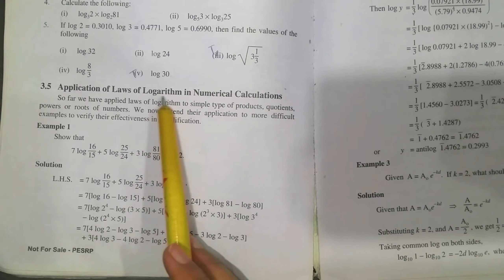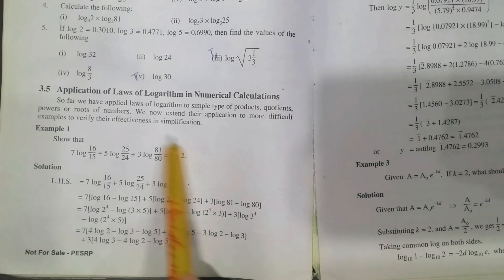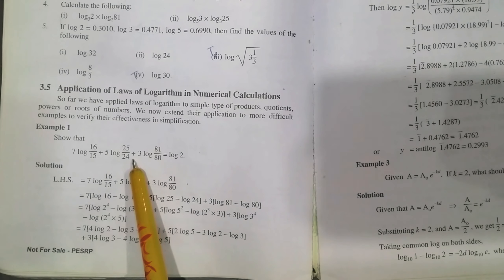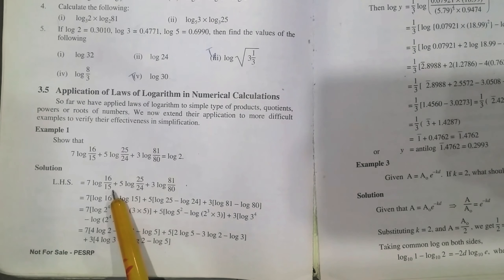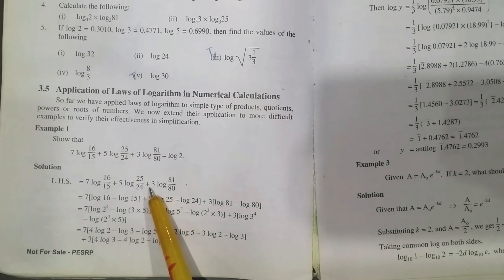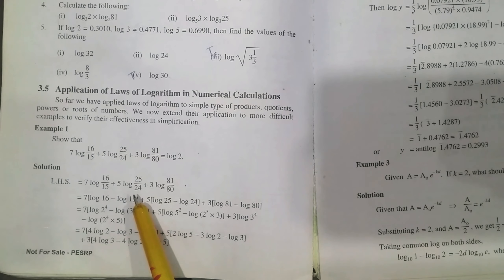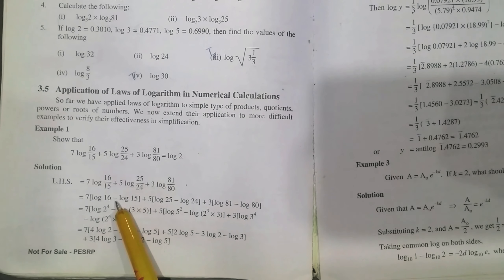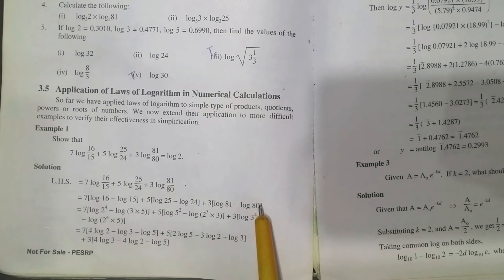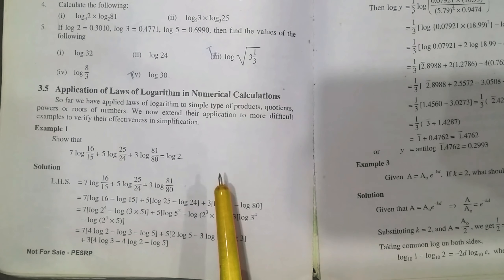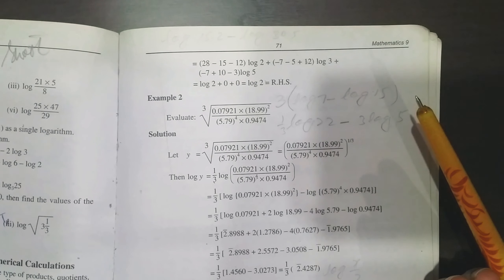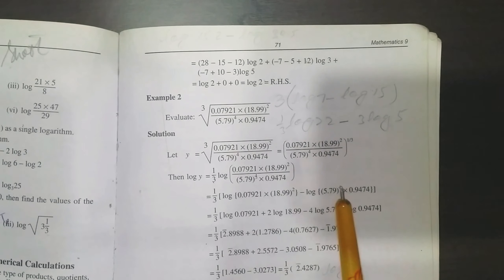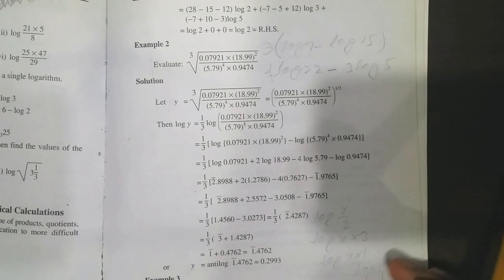These are the applications of logarithm laws in numerical calculations. For a given logarithmic equation, we take the left-hand side: 7·log(15) + 5·log(25/4) + 3·log(81/80). Using the laws, we separate and simplify these terms through the product, quotient, and power rules, performing simple arithmetic operations until we get the right-hand side, which equals log(2). This proves the equation.